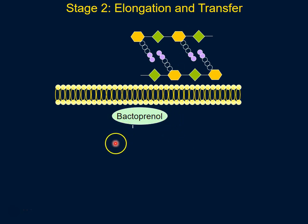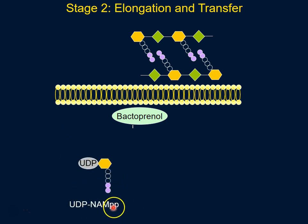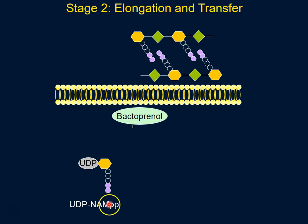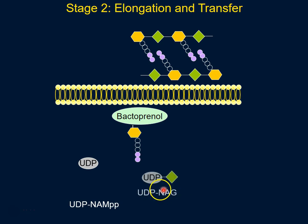Bactoprenol is a lipoprotein that's important for this stage. The first step is where the UDP-NAM pentapeptide attaches to bactoprenol. The second step is where UDP-NAG, the second sugar available to the bacteria, comes in and attaches to NAM.